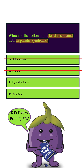Moving on to C: Hyperlipidemia, which is elevated levels of lipids in the blood. This is also heavily associated with nephrotic syndrome due to increased synthesis of lipoproteins by the liver in response to low protein levels in the blood. So this is definitely not the correct answer either.